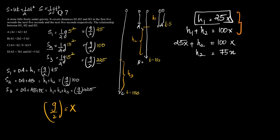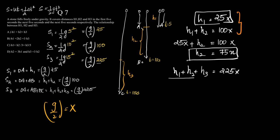So h1 is 25x and h2 is 75x. Now for the third relationship: h1 plus h2 plus h3 equals 225x. But h1 plus h2 is 100x, so 100x plus h3 equals 225x, which gives h3 equals 225 minus 100, which is 125x.